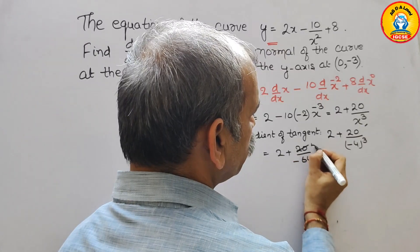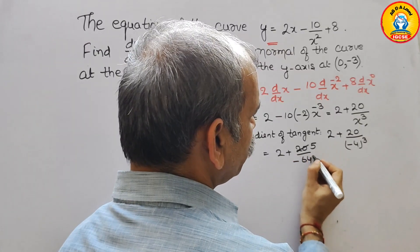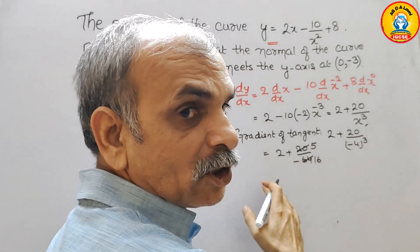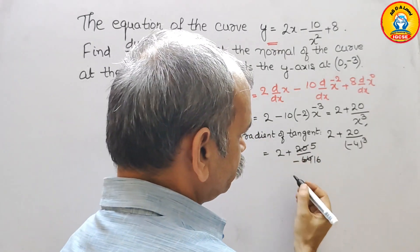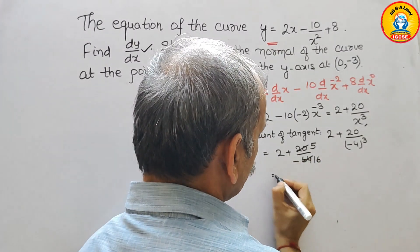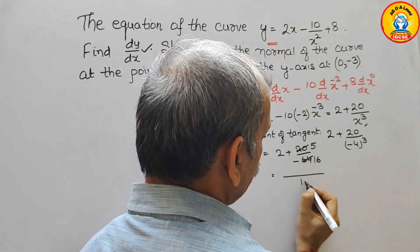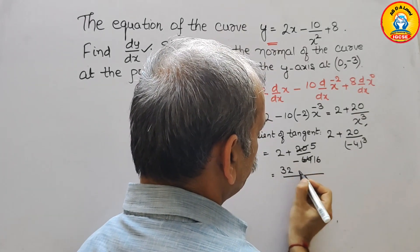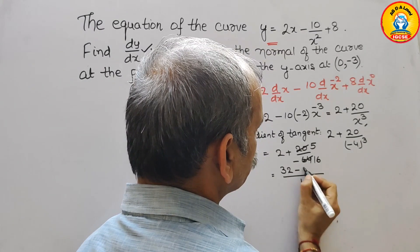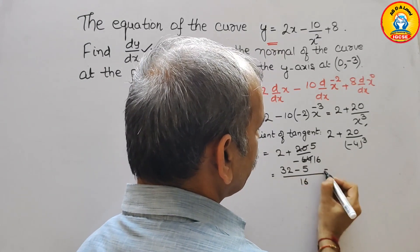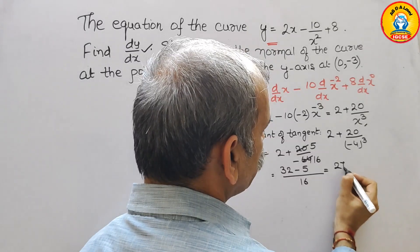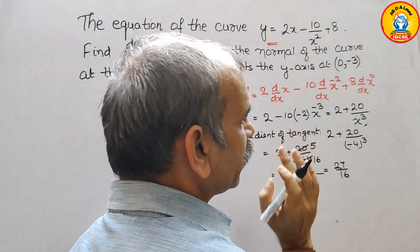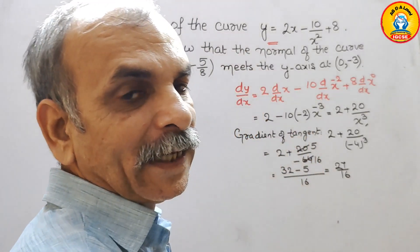If we reduce it, here you will get 5 over 16. So take the LCM, that is 16. And here it will come 32 minus 5, that is equal to 27 by 16. That is the gradient of a tangent.